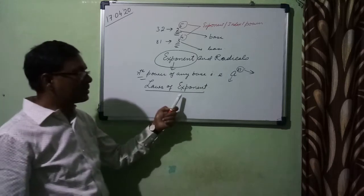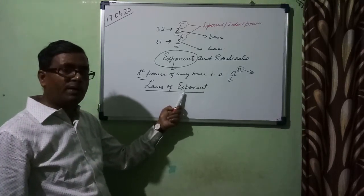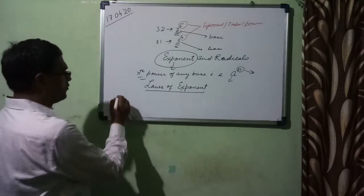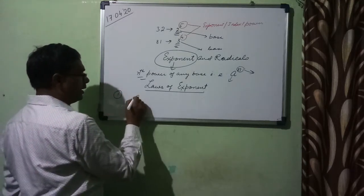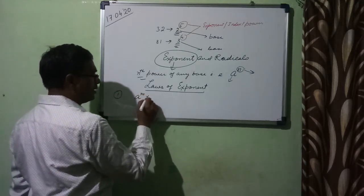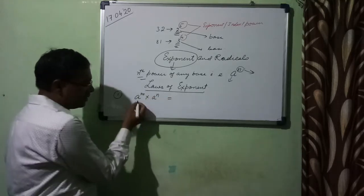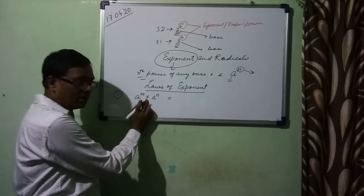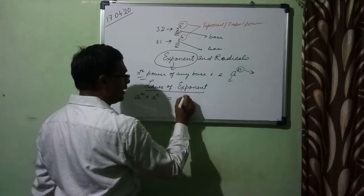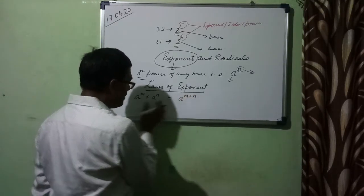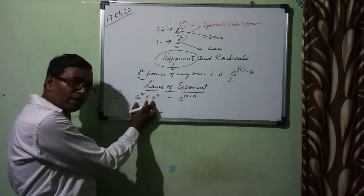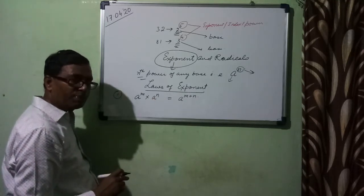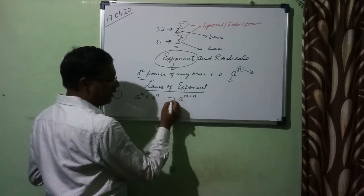Now in this case we have many rules. The first rule: a to the power m multiplied by a to the power n — the bases are the same and this is a product — so the answer is a to the power m plus n. When the bases are the same and the terms are multiplied, the powers are added. So this is a to the power m plus n.